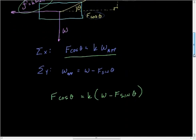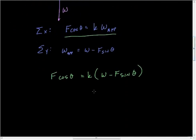Okay, so from here we can simply go ahead and say that if I expand this out, then I have F cosine of theta is equal to K times the weight minus F K sine theta.